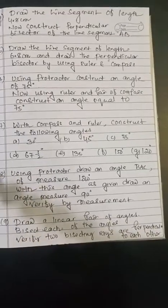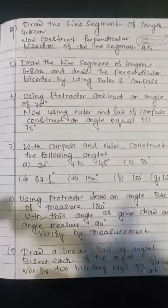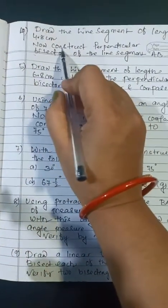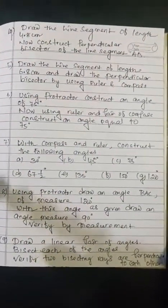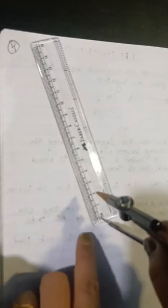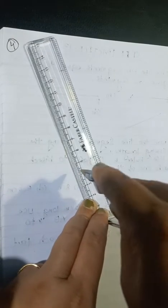Question number 4: Draw the line segment of length 4.8 cm. First, draw the line segment having length 4.8 cm. Place the pointer on the ruler and take the length of 4.8 cm. Measure the length of 4.8 cm.